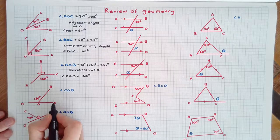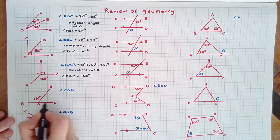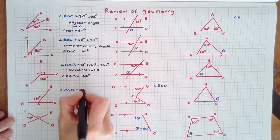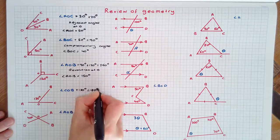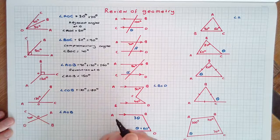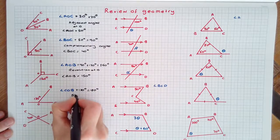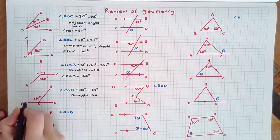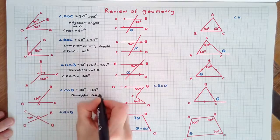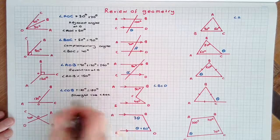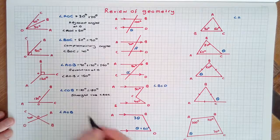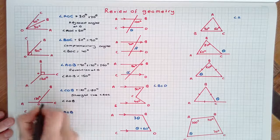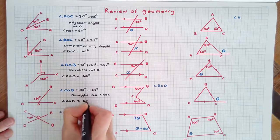Angles in a straight line add to 180 degrees. Therefore angle COB plus 120 degrees equals 180 degrees, using the straight line angle AOC. Therefore angle COB is equal to 60 degrees.